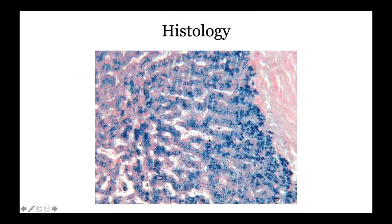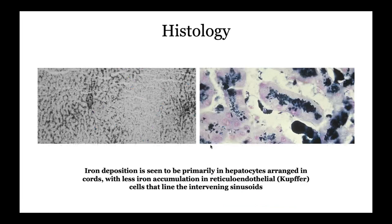On Prussian blue stain, you see iron deposits in the cords of hepatocytes, particularly in the periportal region. Although you might see a little in the Kupffer cells, it's less prominent. Less prominent iron staining in the reticuloendothelial cells and Kupffer cells is the hallmark of primary hereditary hemochromatosis versus secondary causes.